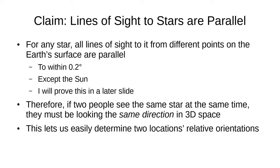Furthermore, I claim that the lines of sight to stars are parallel. That is, for any star, all of the lines of sight to that star, even from different points on the surface of the Earth, are parallel. This is to within a precision of 0.2 degrees, that's our measurement accuracy. And I will address this in a later slide as well. Therefore, if you have two people who see the same star at the same time from different locations, they must be looking in the same direction in three-dimensional space. And that is how we will determine relative orientation.